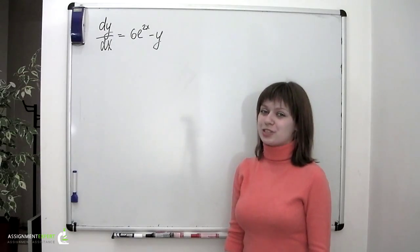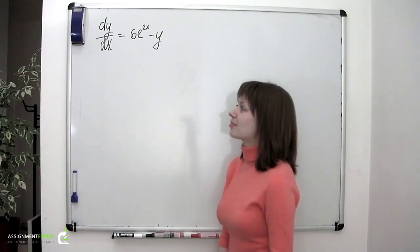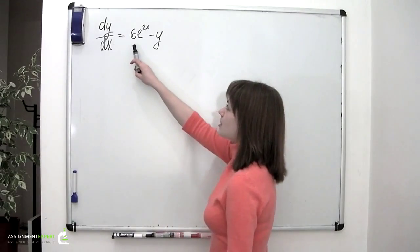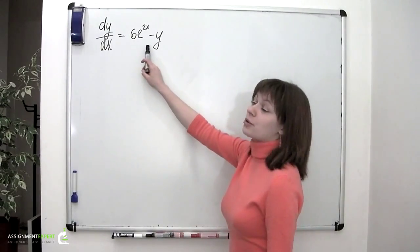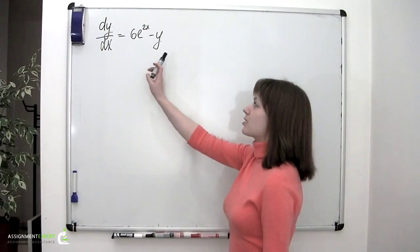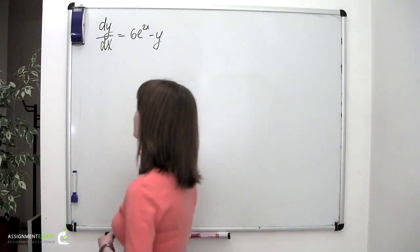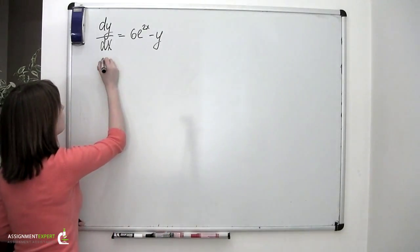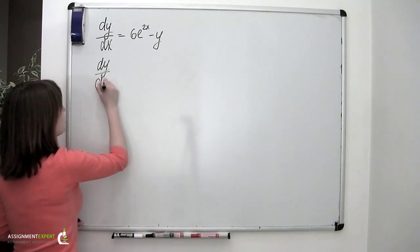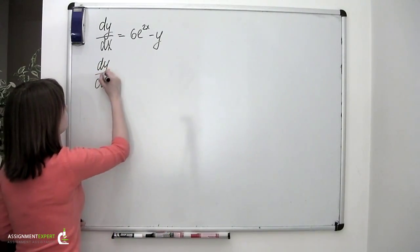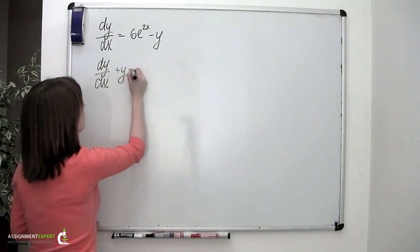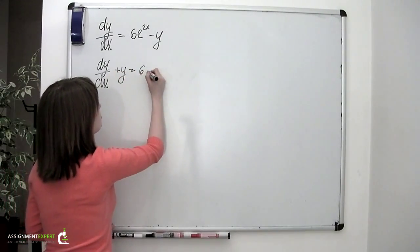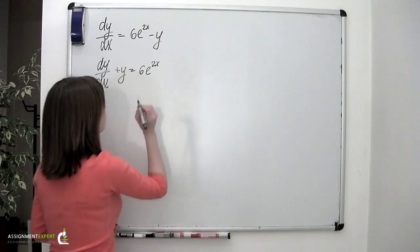We have an equation to solve: dy over dx equals 6 times e to the power of 2x minus y. Or we can also put it in the form dy over dx plus y equals 6 times e to the power of 2x.